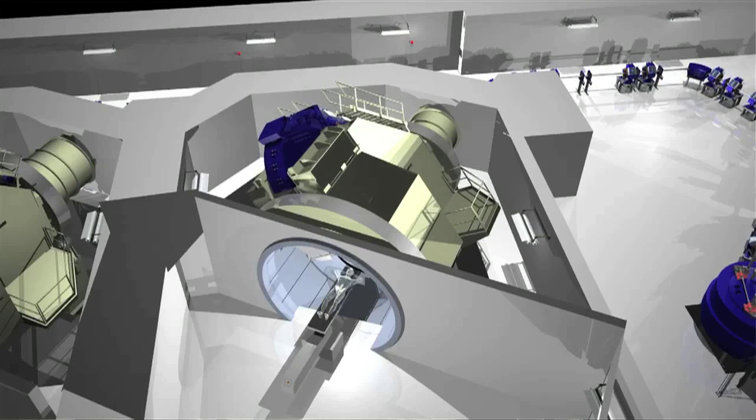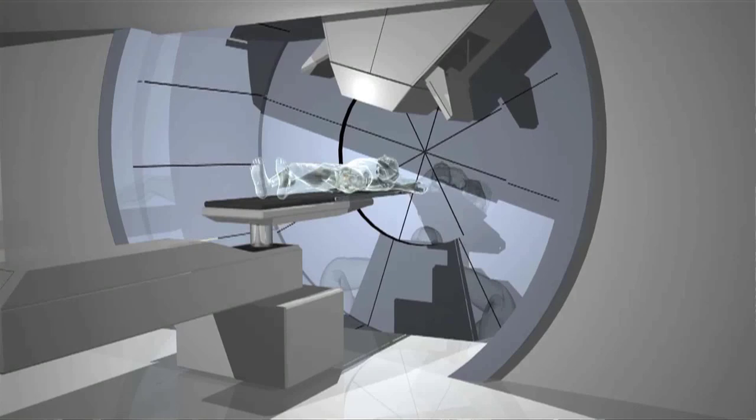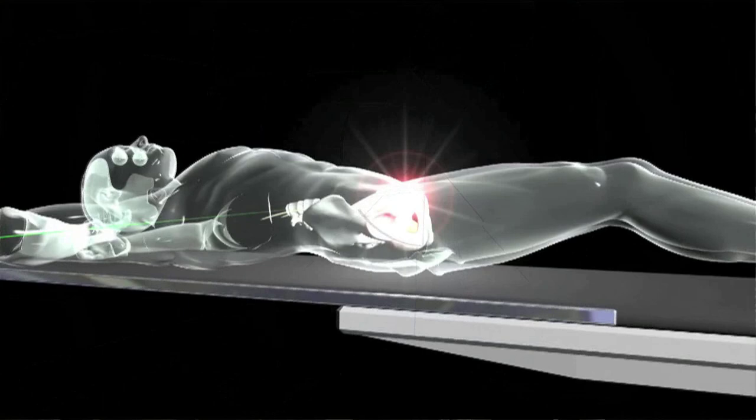So patients get positioned under this machine, and what you see happening is the patient being imaged with this image-guided technology that Dr. Rajin mentioned to you. We can clearly and precisely localize the tumor three-dimensionally in space every day with submillimetric precision, so we know exactly where the tumor is.